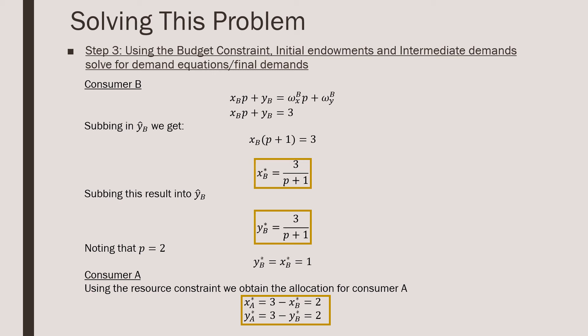Now for consumer A, we're going to use the resource constraint to go and obtain the allocation for consumer A. So we're just going to put in three minus the amount taken by consumer B of each one of these goods, and that's going to be two and two.